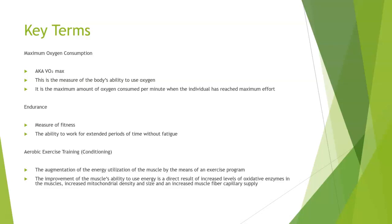Aerobic exercise training is the augmentation of the energy utilization of the muscle by means of an exercise program. If someone needs a higher VO2 max or better endurance, we're going to augment that by having them do training and therefore challenging the cardiovascular system to get more efficient. Aerobic exercise training is the improvement of the muscle's ability to use energy as a direct result of increased levels of oxidative enzymes in the muscles, increased mitochondrial density and size, and an increased muscle fiber capillary supply.